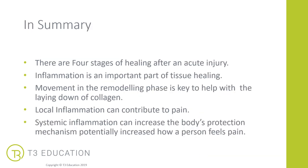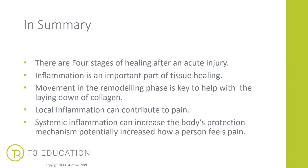In summary: there are four main stages of healing after an acute injury. Inflammation is a really important part of tissue healing, and we need inflammation to help that healing process. We want to ensure that our clients are moving in the remodeling phase, which is key to help with the laying down of new collagen and also creating new bone after a fracture injury. Local inflammation can contribute to pain, and systemic inflammation increases the body's protective mechanism, which can potentially increase how a person feels pain. Here are some references for further reading in this area.